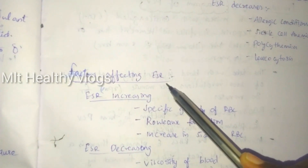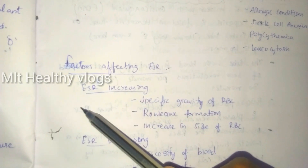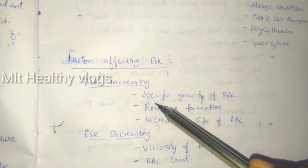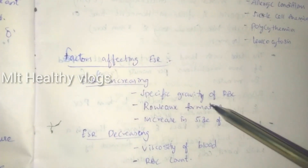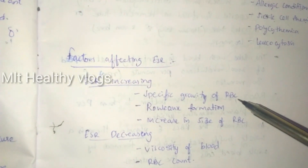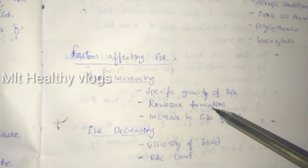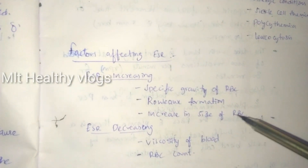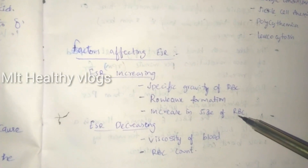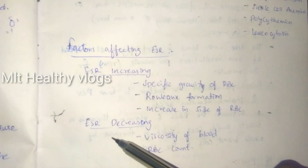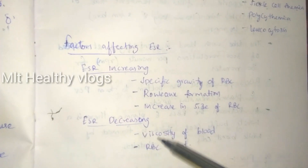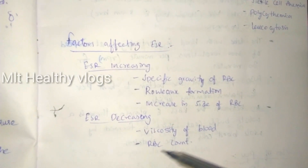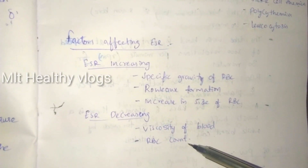Factors affecting ESR: ESR is increased by decreased specific gravity of RBCs, rouleaux formation of RBCs, and increase in size of RBCs. ESR is decreased by increased viscosity of blood and increased RBC count.